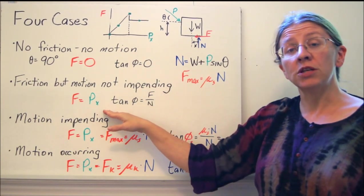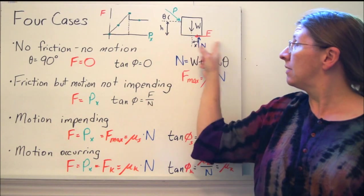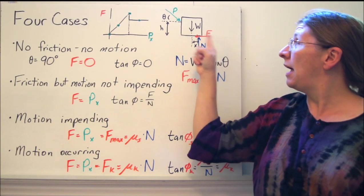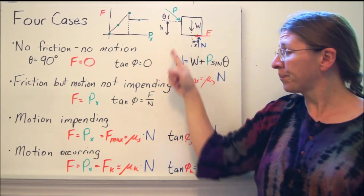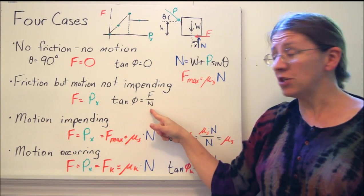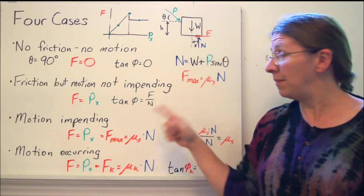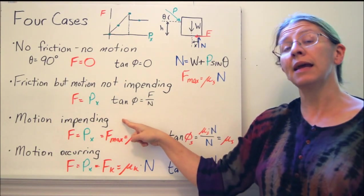Or you can have friction, but no motion, and not even close to it. Then I get from my sum of the forces in x, F equals P cosine theta, or Px. Tan phi is still F over N by definition, but I don't have F max equals mu times N. I'm not equal to that until I get to motion impending.